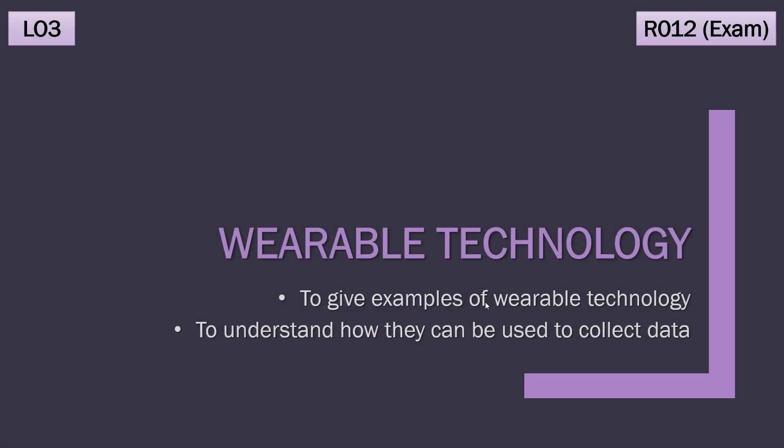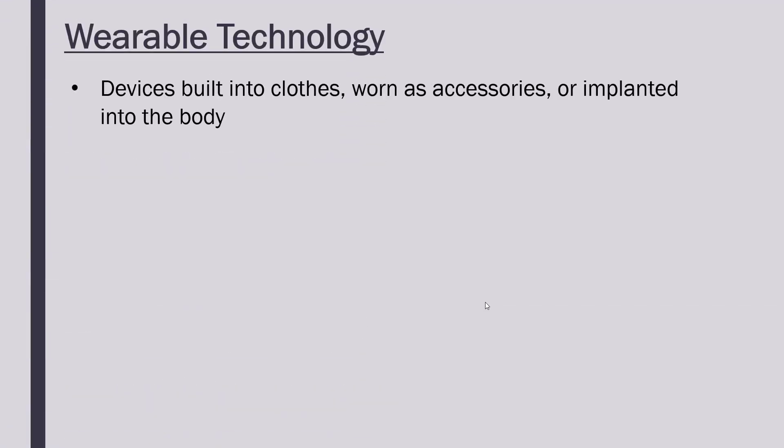Following our look at QR codes and barcodes, we're now looking at wearable technology. So what is classed as this? Well, the device is built into clothes, worn as accessories, or even implanted into the body. In some extreme cases you can have devices put inside your body, maybe under your skin, but usually not.